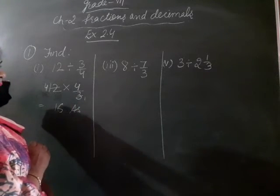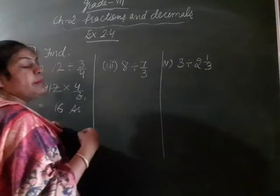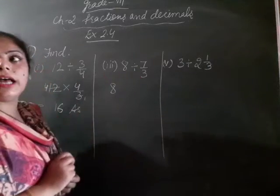Clear? Your next part is 8 divided by 7 by 3. Now, 8 divided by 7 by 3 hain. So our first step is, divide ki jaga hama kaya laga hain?